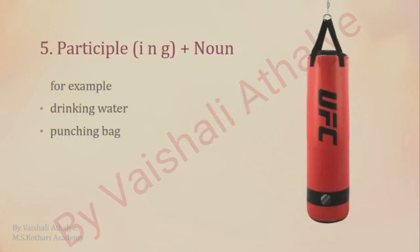The fifth way to form a compound word is a participle — that is, a present participle with -ing — and a noun. Here are two examples: drinking water, punching bag.